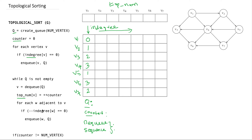We create a queue capable of holding seven values — one per vertex. We initialize counter to 0. Then we enqueue all vertices with in-degree equal to 0 into the queue. Scanning through V1 to V7, V1 has in-degree 0 so we enqueue V1. No other vertex has in-degree equal to 0, so the queue now contains only V1.